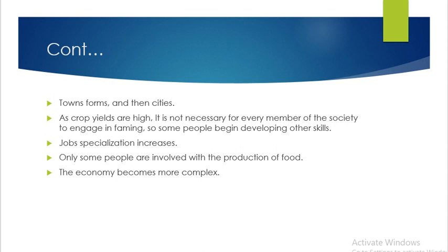Towns and cities developed. As crop yields are high, it is not necessary for every member of society to engage in farming, so some people began developing other skills. Food quantity increased, and people started learning other skills. Job specialization increased — only some people are involved with the production of food. The economy becomes more complex.